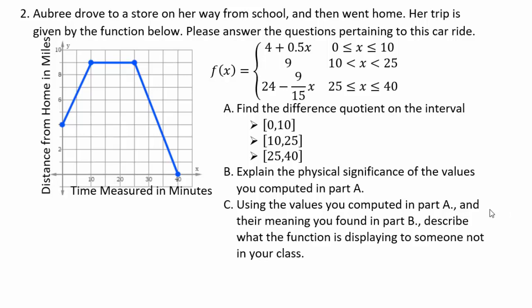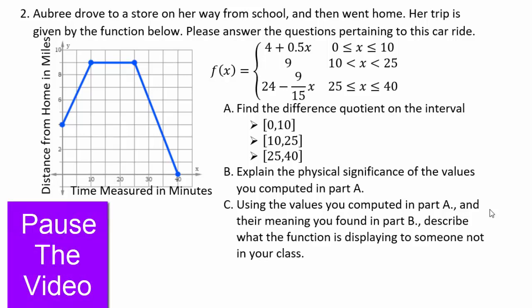Let's take a look at the next example. Here you are given a function that represents Aubrey's ride from the store on her way from school and then going home. Her trip is given by this function, and you are asked to find the difference quotient on the interval and explain what the physical significance of the values you compute are. And then using these values that you compute in part A, also tell us what is their meaning, and describe what the function is displaying to someone that is not in your class. Pause the video here and see what you think is happening here. See how you can interpret that. Go ahead, pause the video and see what you can do, and then we'll discuss the solution together.